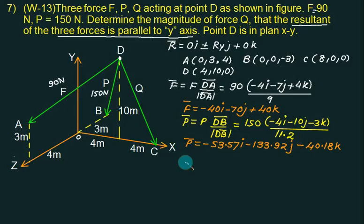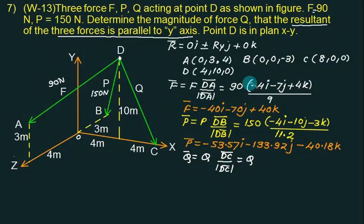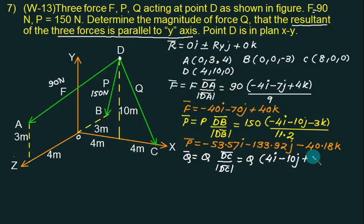The last force is Q. Q̄ is directed from D to C, so Q̄ = Q times (DC̅ / |DC̅|). We don't know Q yet. DC is C minus D: 8 minus 4 gives 4 I; 0 minus 10 gives minus 10 J; 0 K. The magnitude is the square root of 4² plus 10² plus 0², which equals 10.77.